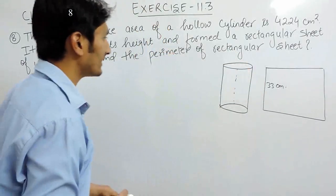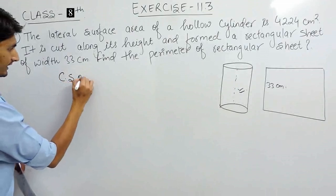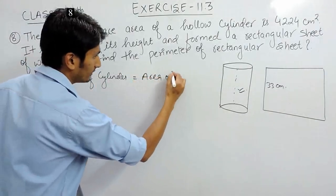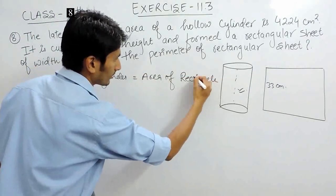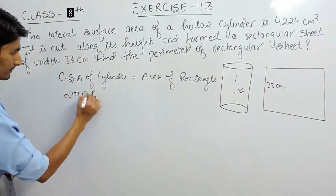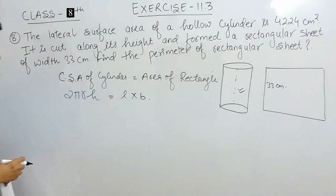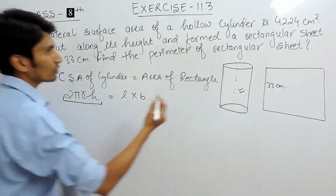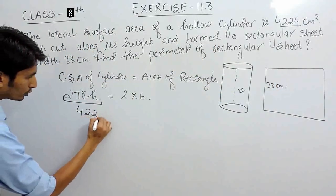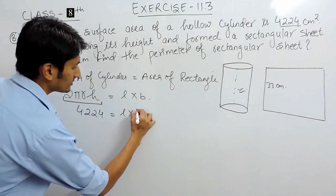In this question we are saying the curved surface area should be equal to the area of the rectangle. And we know that curved surface area of the cylinder is 2πr multiplied by h and this is equal to length into breadth. And in this case, the curved surface area is already given as 4224 cm². So in place of this, we can write 4224 and length you have to find for the rectangle and width is given as 33 cm.